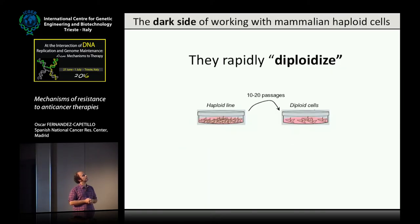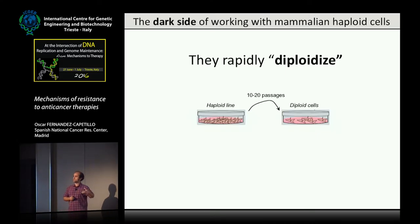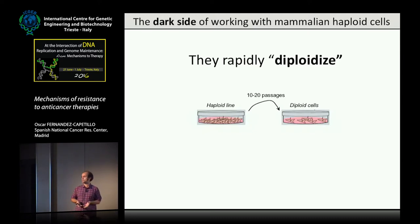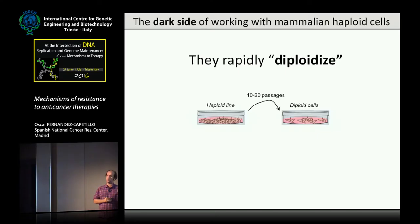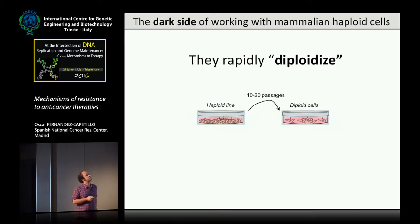This was first done by Anton Wutz in 2011 and has since been reproduced by many labs, including ours at CNIO in Madrid. However, there is one dark side you only learn about when you actually start working with these cells — it's not in the papers. Nobody tells you until you start: if you don't sort for haploidy very fast, you end up with a diploid culture. We ordered the cells, nobody warned us, and within one month we had a diploid culture.